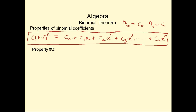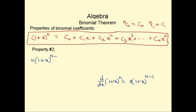If we differentiate (1 + x)^n, the differentiation of (1 + x)^n is n times (1 + x)^(n-1), and then the differentiation of (1 + x) is 1, so times 1. So the differentiation of the left-hand side is n times (1 + x)^(n-1).